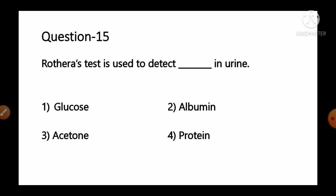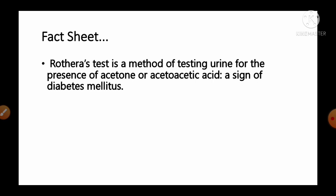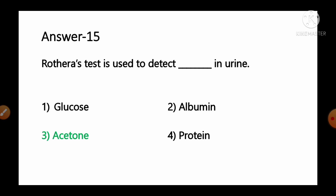Question number 15: Rothera's test is used to detect — in urine. Options: 1) glucose, 2) albumin, 3) acetone, 4) protein. Rothera's test is a method of testing urine for the presence of acetone or acetoacetic acid, a sign of diabetes mellitus. So option number 3, acetone, is the correct answer.